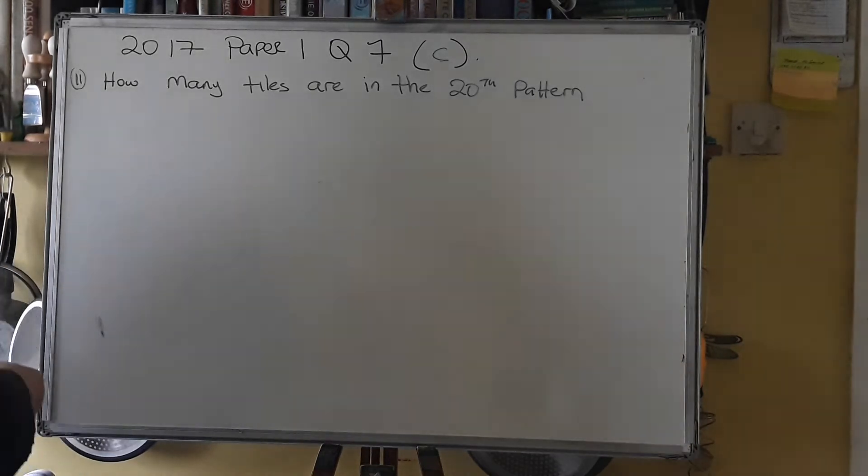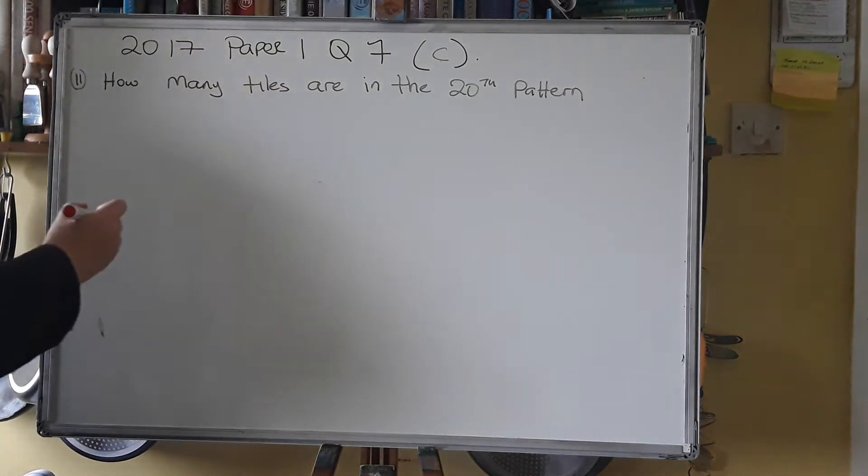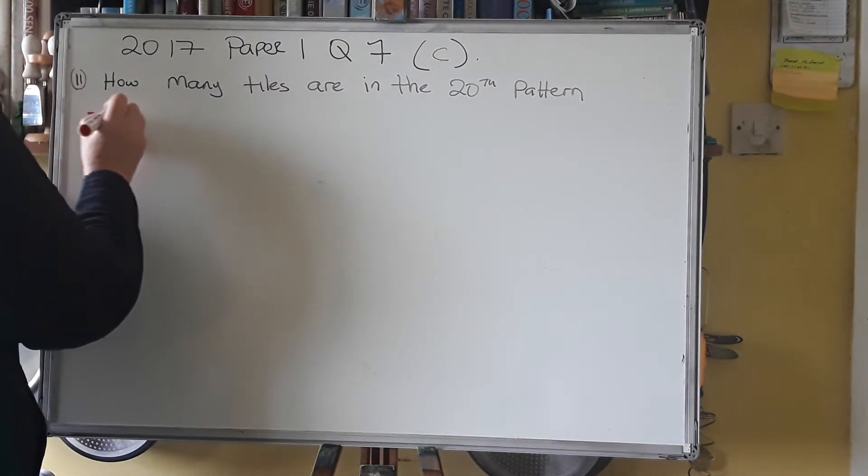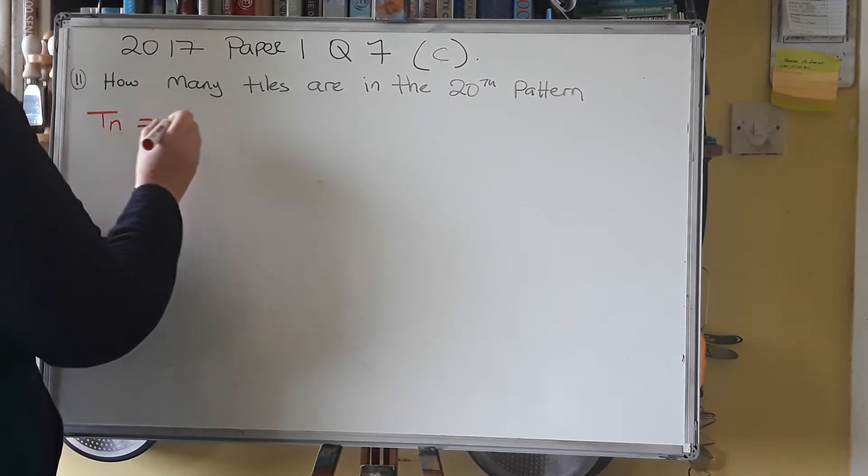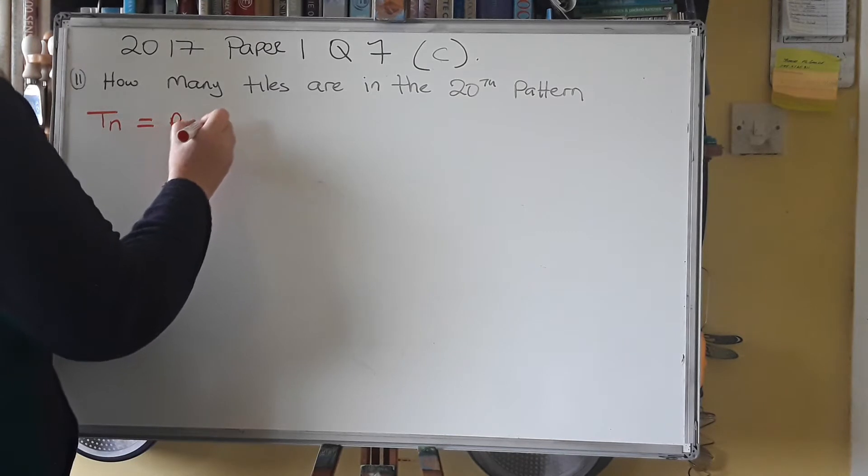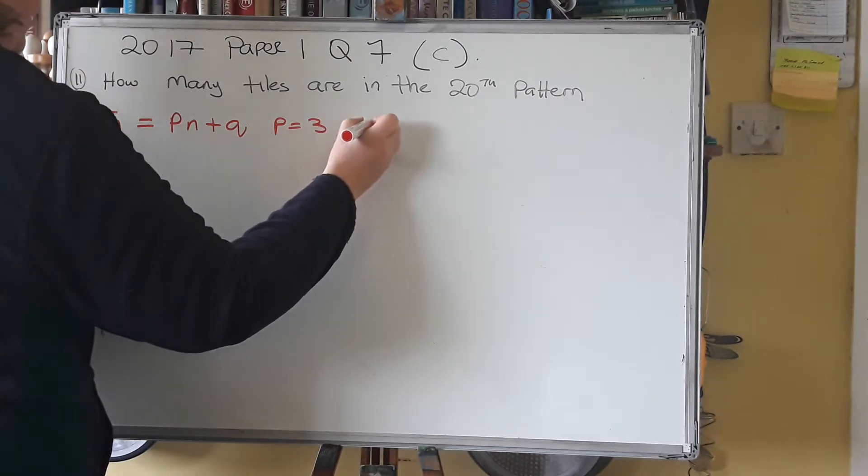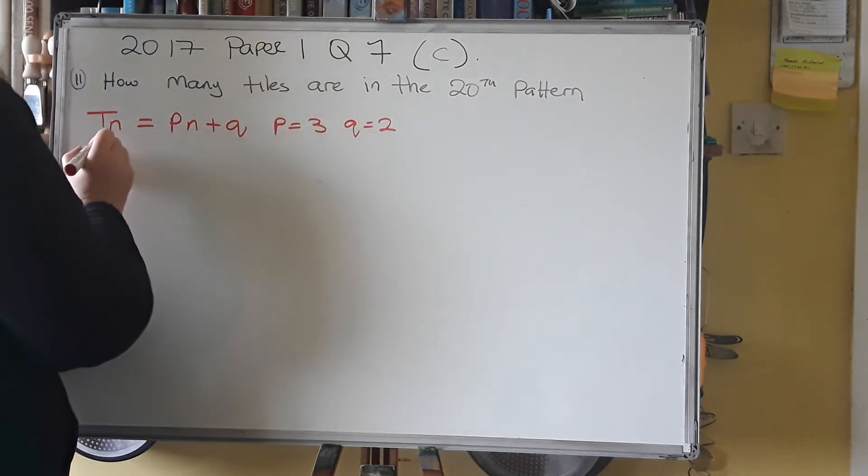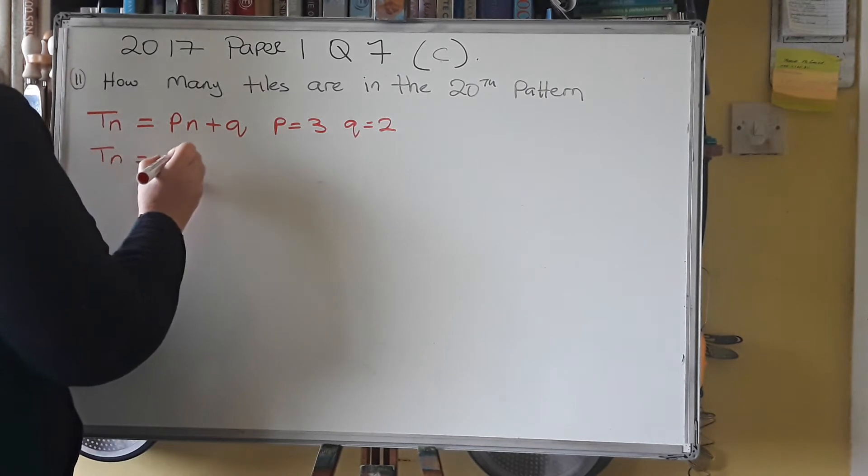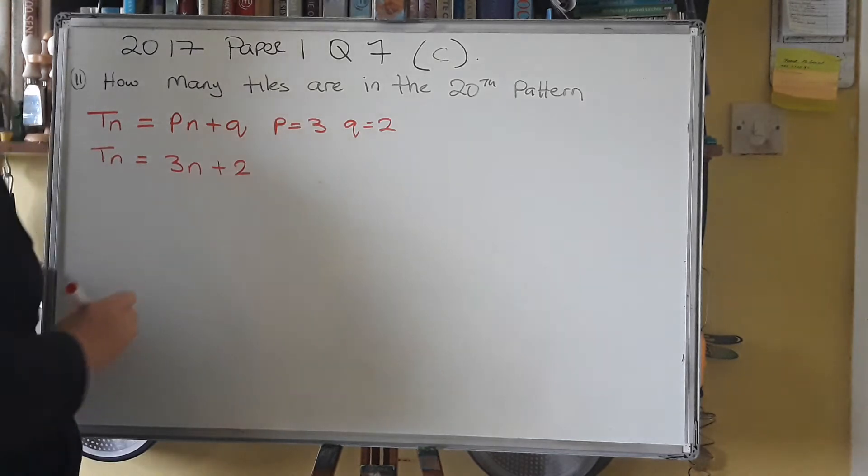So see part 2. How many tiles are in the 20th pattern? So again, pause, have a go of it, and press play to see the solution. So we know now that Tn was equal to Pn plus Q. Now we know that P equals 3 and Q equals 2. So now we can work out that any term is equal to 3 times n plus 2.